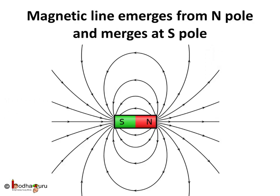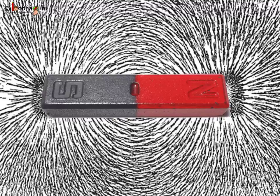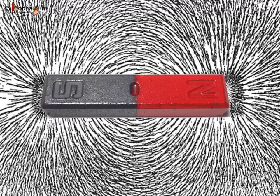Now, if you want to visualize the invisible magnetic force, first visualize the magnetic field lines which emerge from the north pole and merge at the south pole. Thus, these lines are actually closed curves.